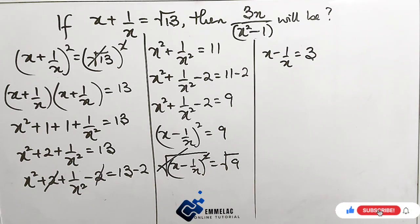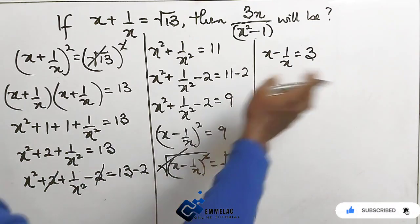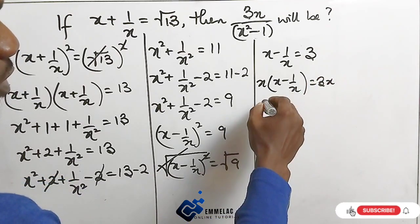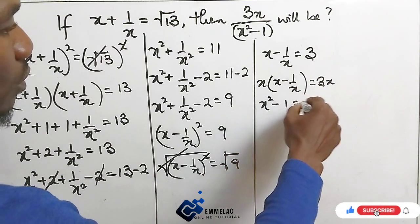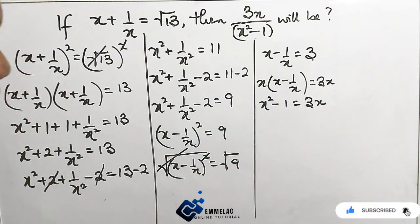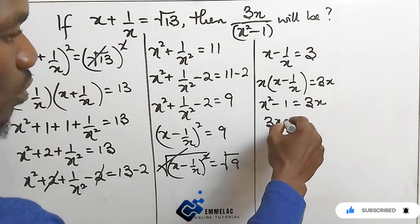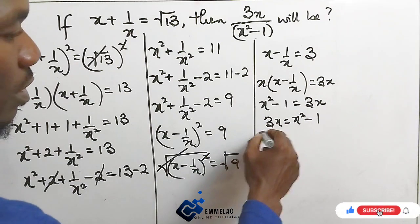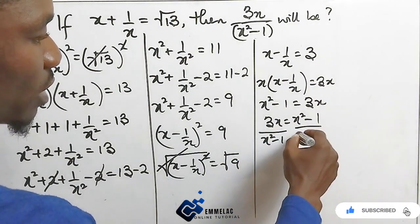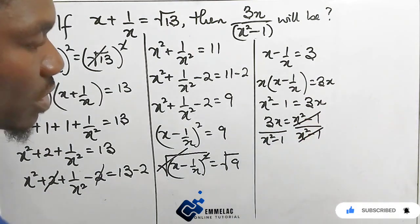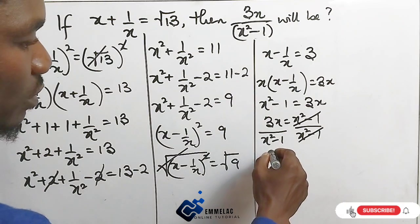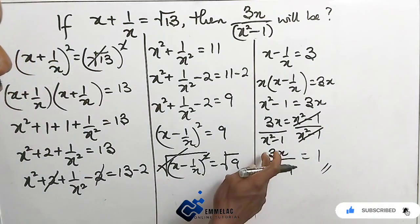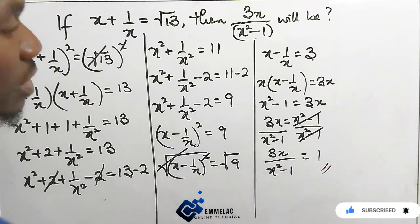Now, what else do we do? Let us multiply both sides by x. By multiplying, we have x into x minus 1 over x equals 3x. So we have x squared minus 1 equals 3x. Let us rearrange: 3x equals x squared minus 1. Now divide both sides by x squared minus 1. We have x squared minus 1 over x squared minus 1, so those cancel out, and we are left with 3x over x squared minus 1 equals 1. That is the answer.